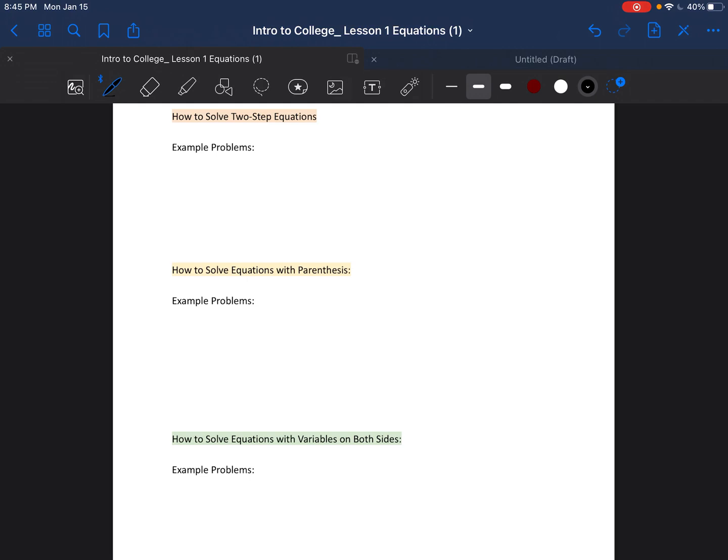All right, so let's get another example with parentheses just to make sure that you guys have it down pack. 2 times the quantity 20 plus x is equal to 50. So the parentheses means we distribute. We're distributing the 2 times the 20, 2 times the x. We made the arrows because we're never too old for arrows. 2 times 20 is 40, 2 times x is 2x equals 50.